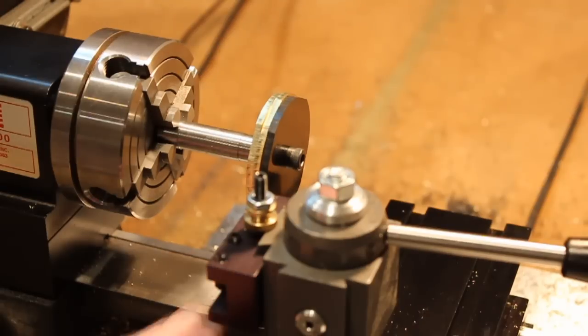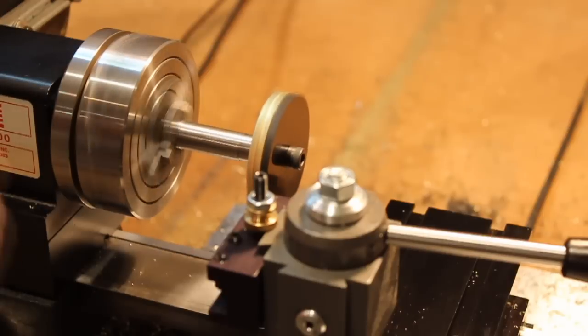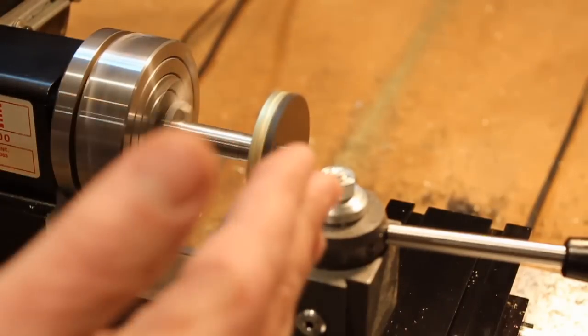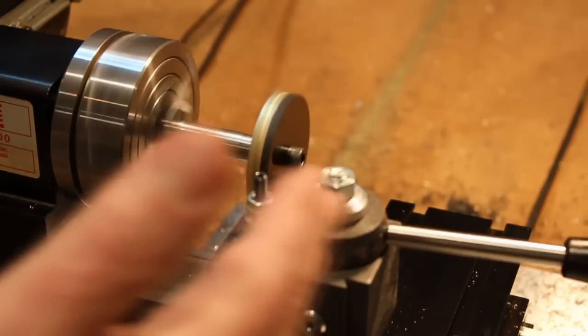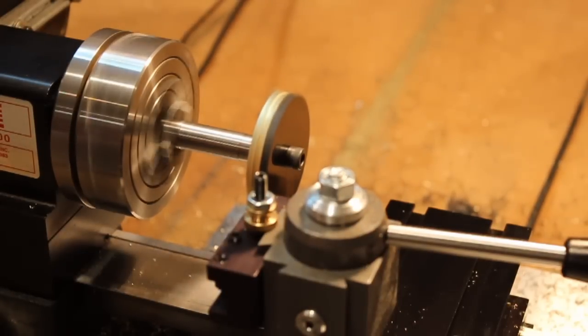All right, so I'm going to run the lathe at around 1400 RPM, my Z feed is four inches a minute and I'm taking three one thousandths of the diameter on each pass.